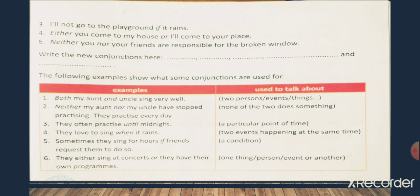In our last class we read about the examples and the purpose of using these conjunctions. When we talk about 'both...and', we talk about two persons, events or things. When we talk about 'neither...nor', we talk about none of the two doing something. When we talk about 'until', we point at a particular time. When we use 'when', we refer to two events happening at the same time. When we use 'if', we are talking about a condition. When we talk about 'or', we talk about a choice that we can make.